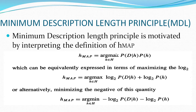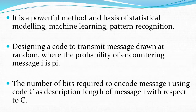Alternatively, this maximum posterior hypothesis formula can also be represented by minimizing the negative quantity: arg min h in H of minus log2 P(D|H) minus log2 P(H). Here, P(H) is the probability of the hypothesis, and P(D|H) is the probability distribution over the hypothesis.